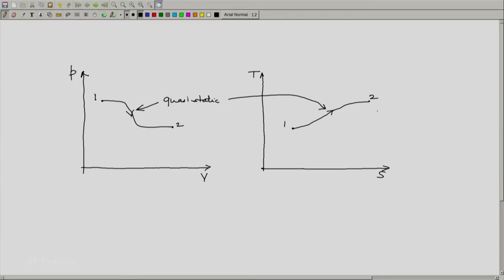So can it be on the TS diagram, and because it is a nicely defined continuous curve, we can determine the area under this curve on the PV diagram. Let me call it APV.